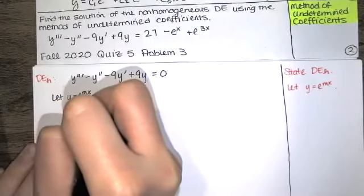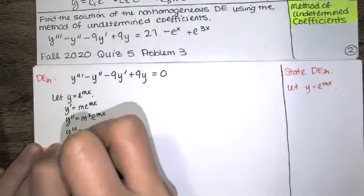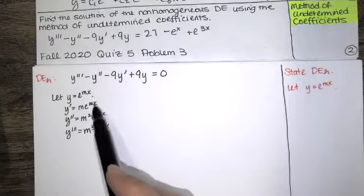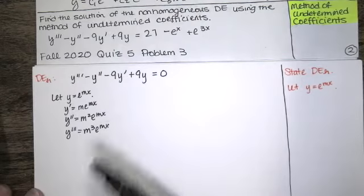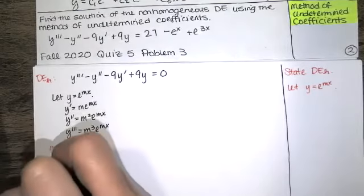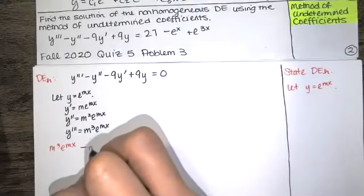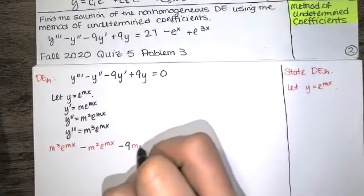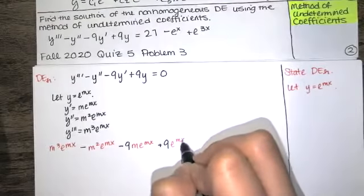Then y prime is m e to the mx, y double prime is m squared e to the mx, y triple prime is m cubed e to the mx. That comes from taking the derivative — derivative of e to some power is e to that power times the derivative of the inside, and the derivative of a constant times x is just the constant. We substitute into the differential equation: y triple prime minus y double prime minus 9 times y prime plus 9 times y, which is e to the mx, equals zero.